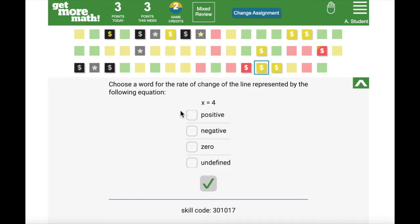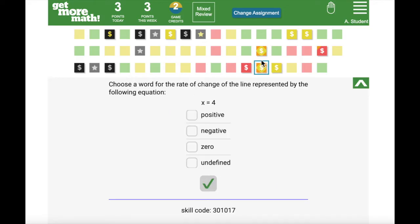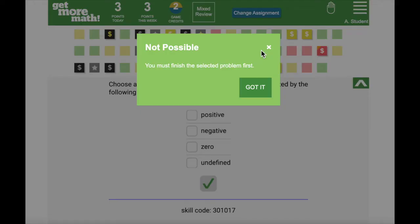You'll notice every time I click away from a square it gains an orange triangle in one corner. If I do this four times, Get More Math won't let me click away anymore. I have to work on this problem.